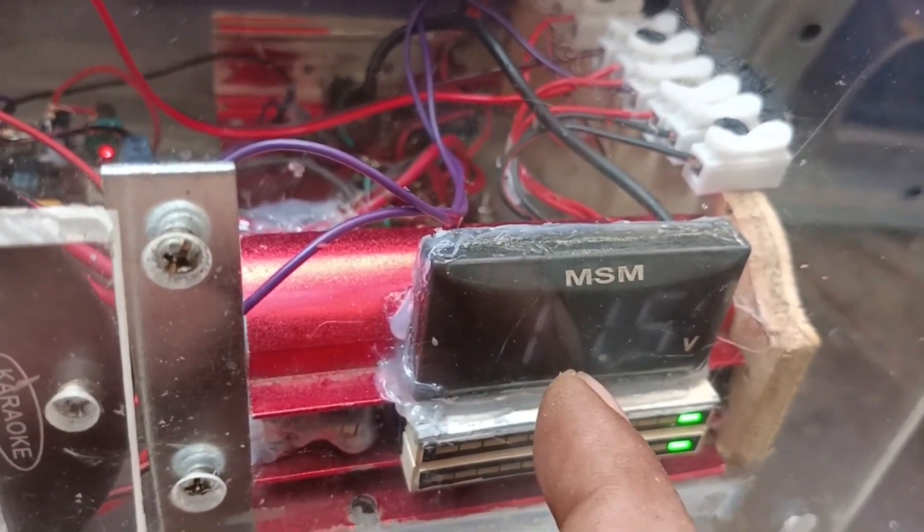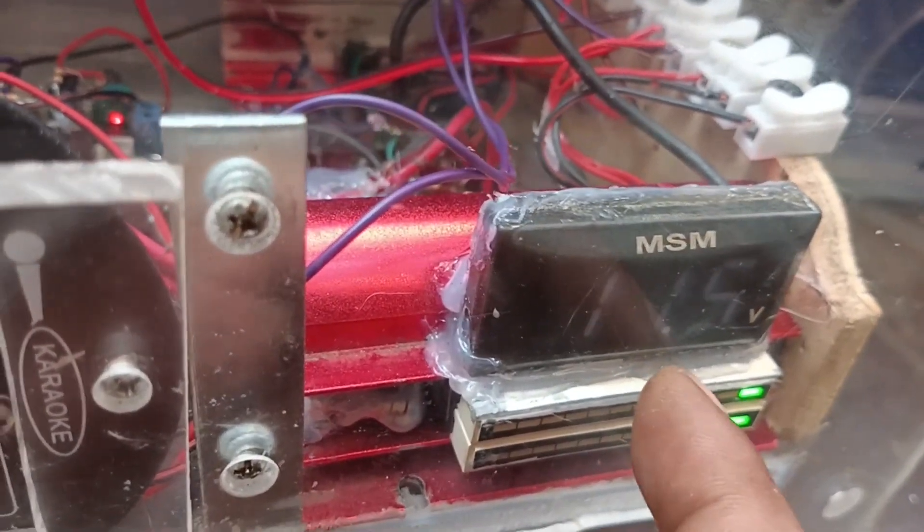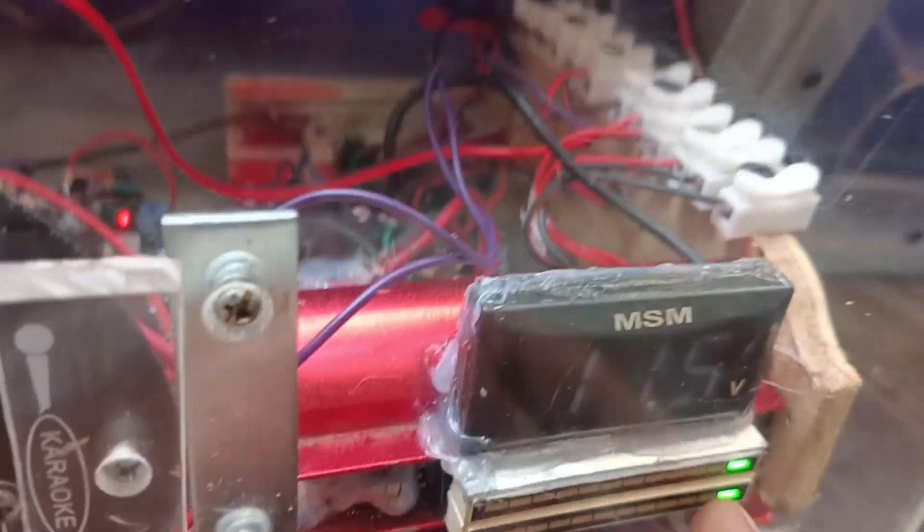At nilagyan ko rin siya ng ilaw na kulay blue sa loob. Kaya kumihilaw siya sa loob. Started na tayo ng battery ko, 11.5 volts. Medyo wala ng karga battery ko. At yung biometer, yan yung gumagalaw-galaw.